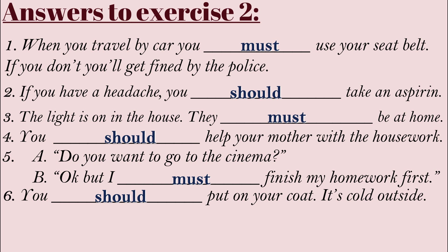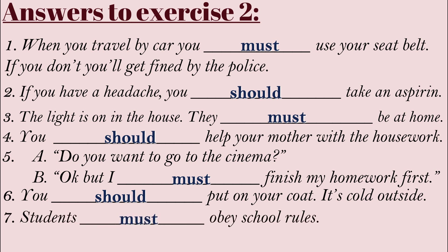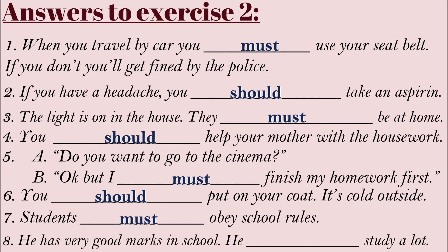Number seven: 'Students must obey school rules.' This is very strong because if you go against the rules at school you might be punished or even expelled, and that's a calamity. Number eight and last: 'He has very good marks in school — he must study a lot.'